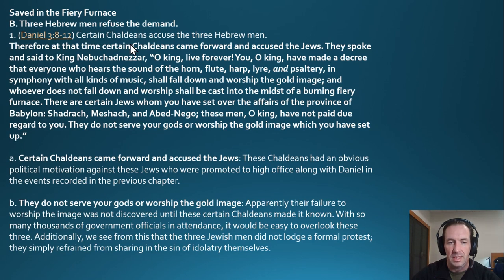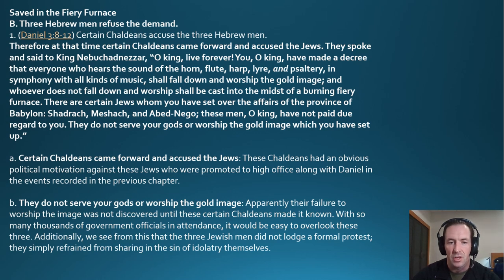Certain Chaldeans came forward and accused the Jews, speaking to King Nebuchadnezzar and reminding him of his decree. They reported that Shadrach, Meshach, and Abednego — whom the king had set over the affairs of the province of Babylon — had not paid due regard to him, did not serve his gods, nor worshipped the gold image which he had set up.